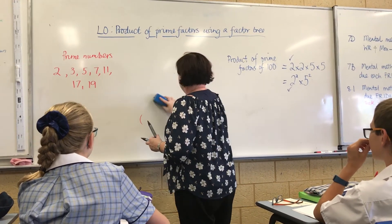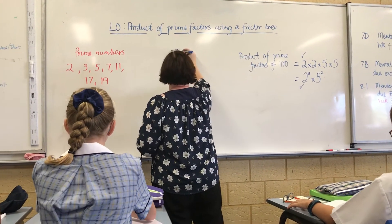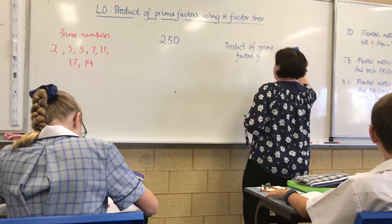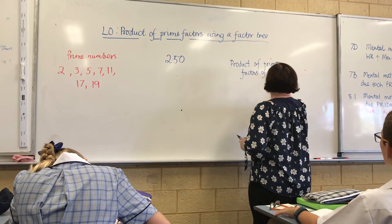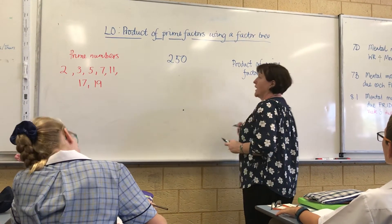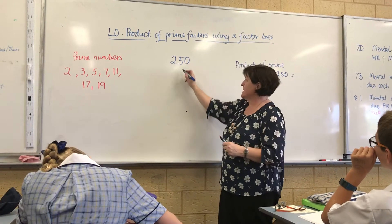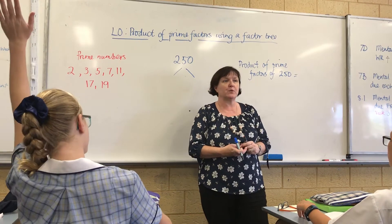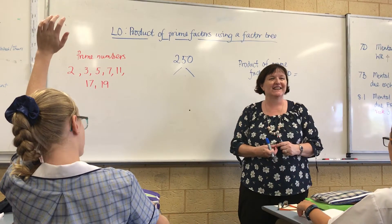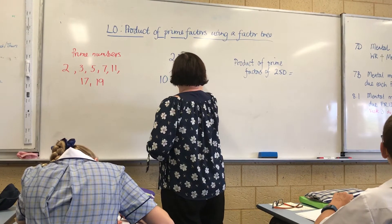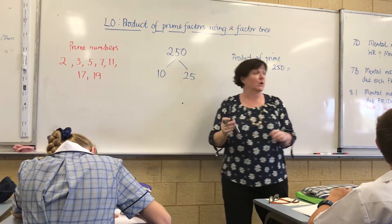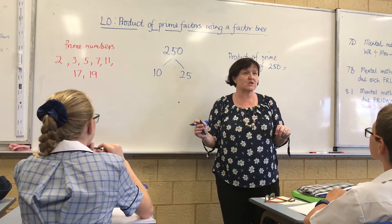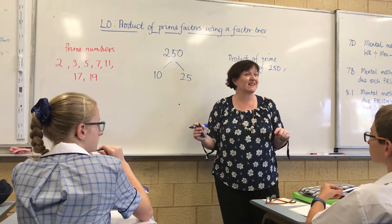Let's do 250. So start at the top with 250 and draw two branches. Who can give me a multiplication sum whose answer is 250? Cassidy says 10 times 25 — good. Now, are either of those branches finished? Why not, Mackenzie? Because they're not prime.